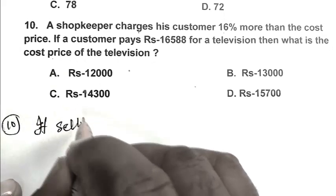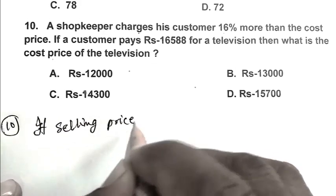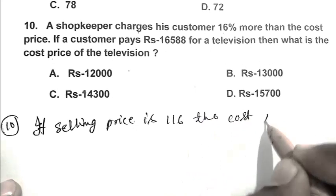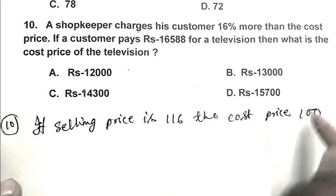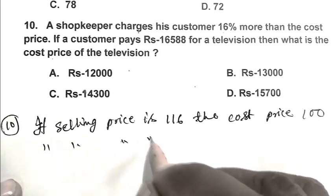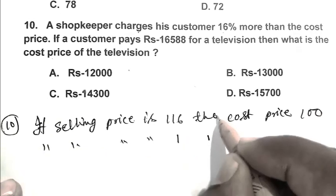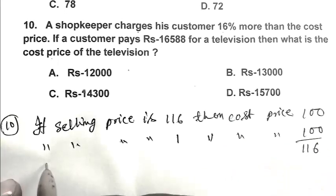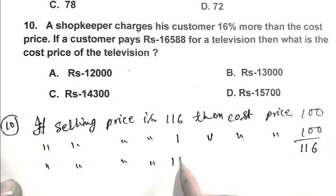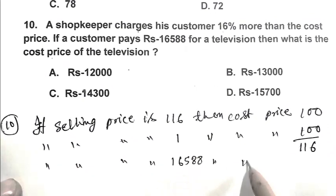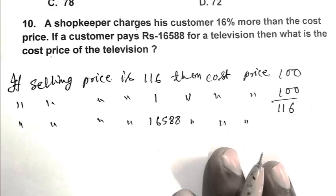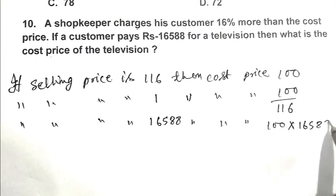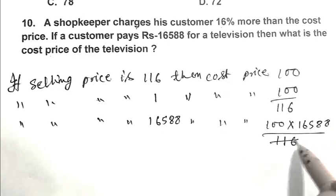If selling price is 116, then cost price is 100. If selling price is 16,588, then cost price is 100 upon 116 multiplied by 16,588.